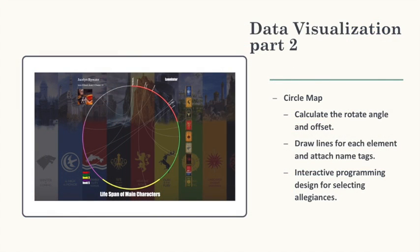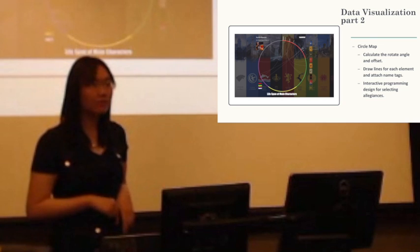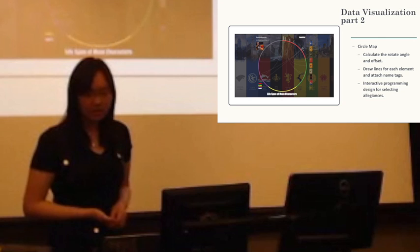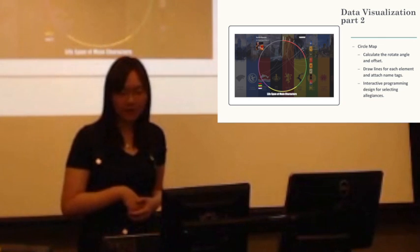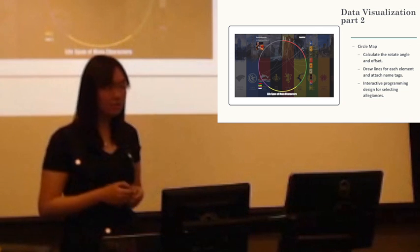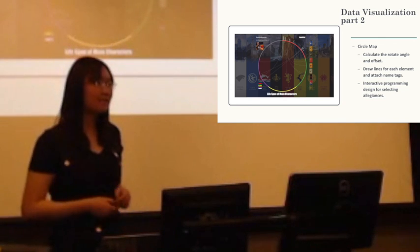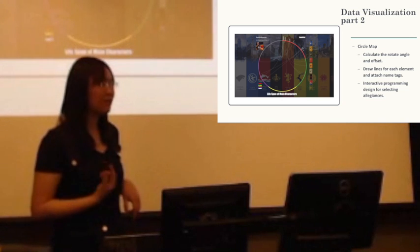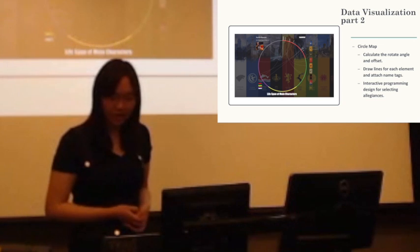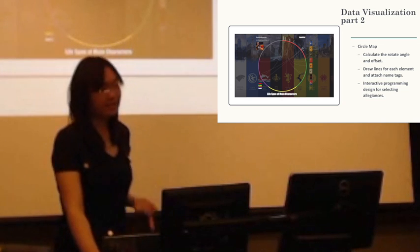And for the second part, I developed a cycle map. It is very interesting to see because it's very interactive. You hover your mouse onto each image, then things will change. The most challenging part in this is you need to calculate the rotate angle. Like, you see this is a circle, not like some rectangular thing. You have to do some analysis on it. I did it in Excel, so it will be easier to directly relate it to my code. And also, I draw lines for each element and attach the name text to it as well.